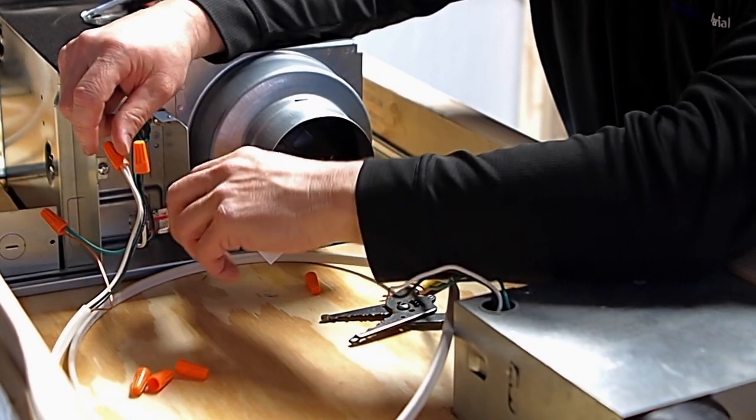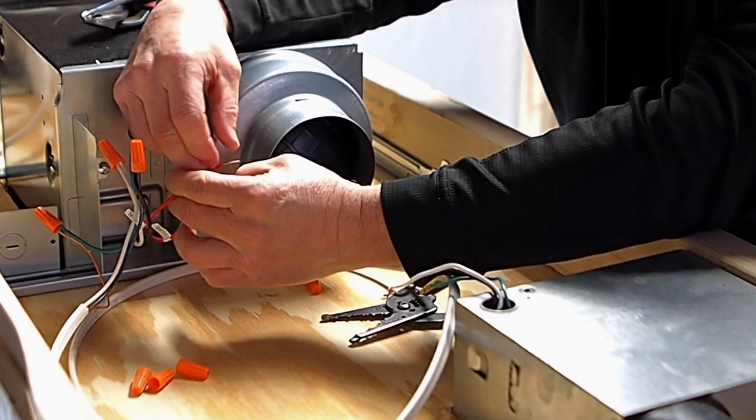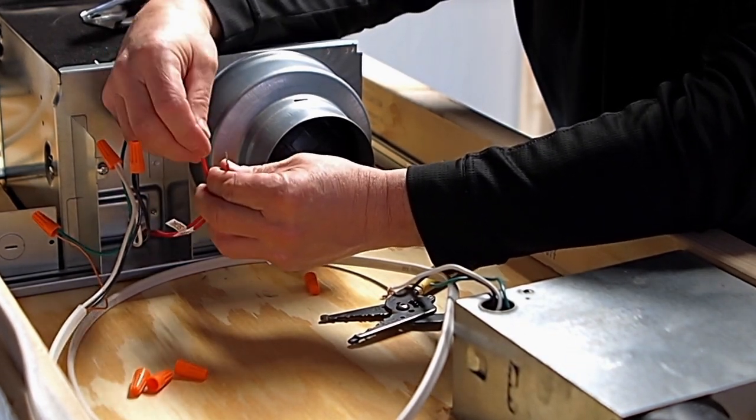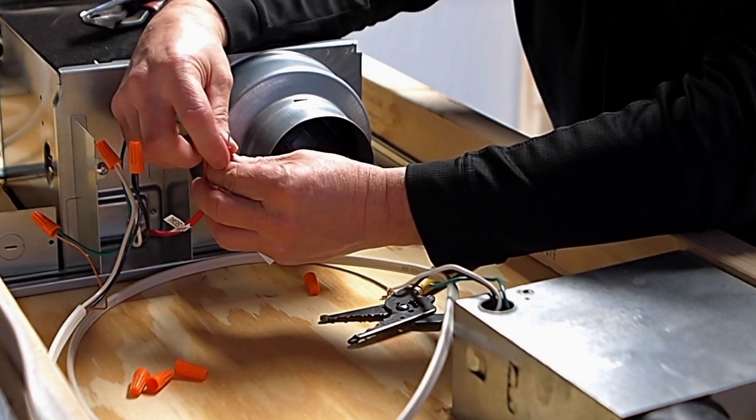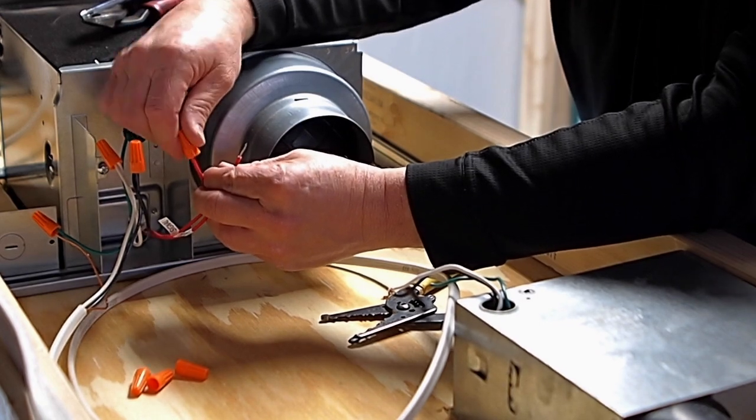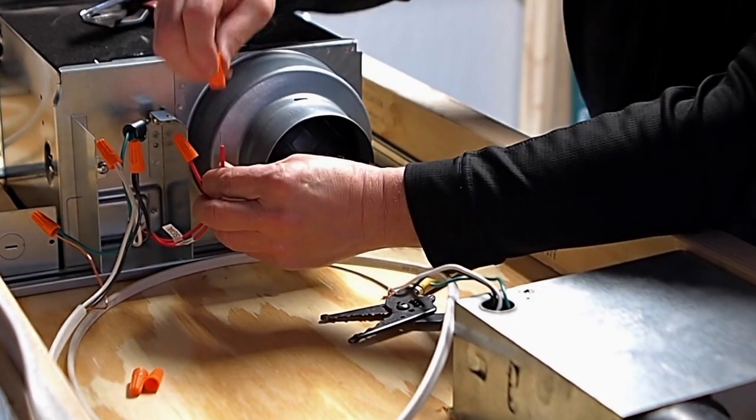So we've got that hooked up but what you also see which is confusing to everybody is these two red what they call signal wires. So since we're using a motion sensor we're not going to use these red signal wires. We are going to wire nut those off individually.